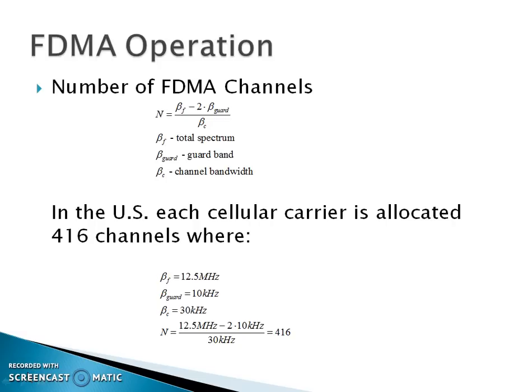Next, the FDMA operation. The number of FDMA channels is defined by N = (total spectrum − 2 × guard band) / channel bandwidth. In the US, each cellular carrier is allocated 416 channels, where N = (2.5 MHz − 2 × 10 kHz) / 30 kHz = 416 channels.